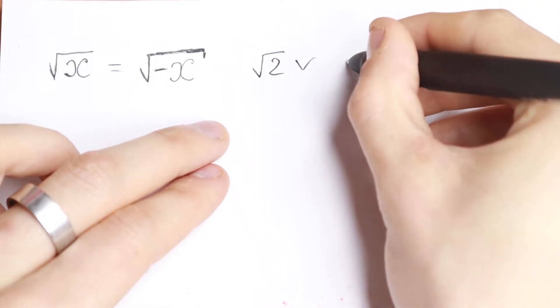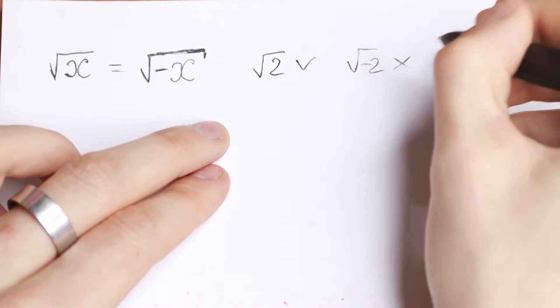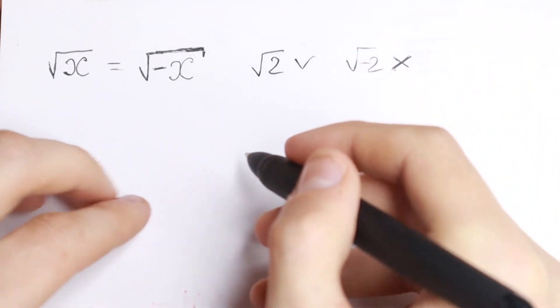For example, square root of two is valid, but square root of minus two is not. So let's use this logic.